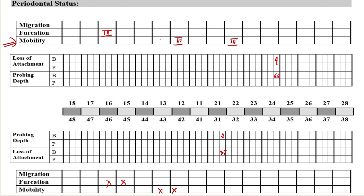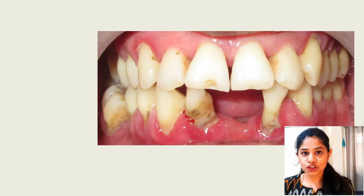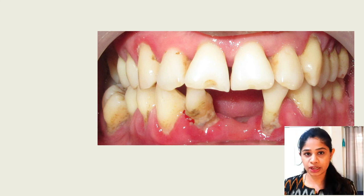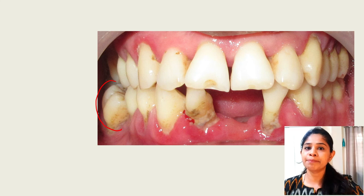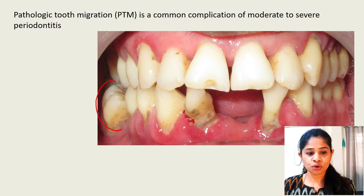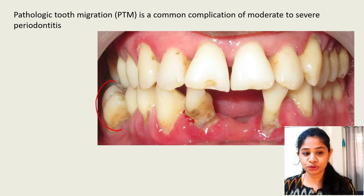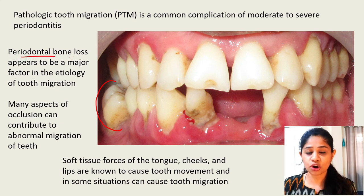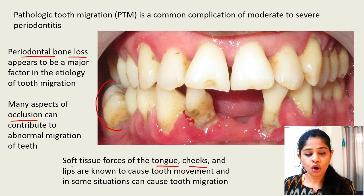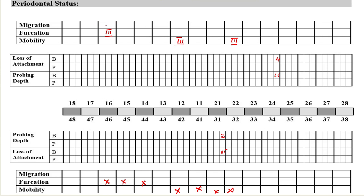Now let's talk about the last aspect, which is migration. Because of underlying periodontitis and loss of bone support, the tooth will migrate to a location where physiologically it must not be present. As you can see, the molar has completely buccally tilted or migrated. Pathologic tooth migration is a common complication of moderate to severe periodontitis. The most common cause is periodontal bone loss, but other reasons like occlusion or soft tissue forces from the tongue, cheek, or lips can also cause pathologic tooth migration. On our periodontal chart, tooth 46 has migrated and the laterals have migrated as well.